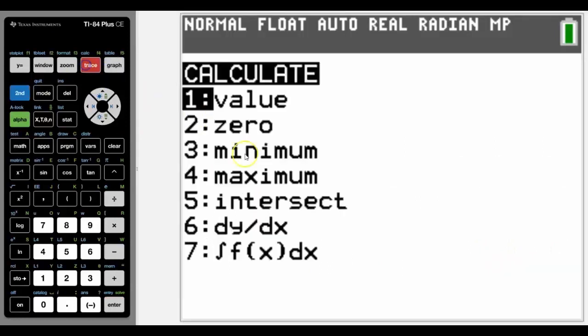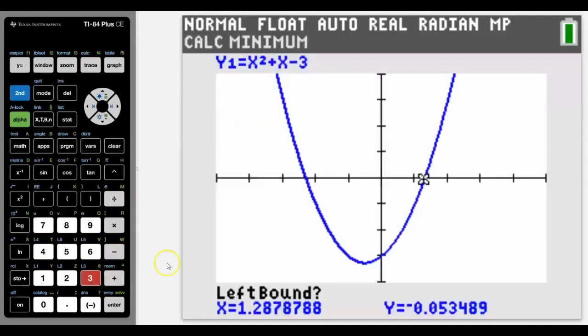We're now going to look at the minimum and maximum and that would obviously depend on whether you're looking at the convex or concave section of the curve. In this case my quadratic is convex so we're going to look at the minimum and the way that we do that is very similar to the zero. We need to go to the left of where the minimum is.